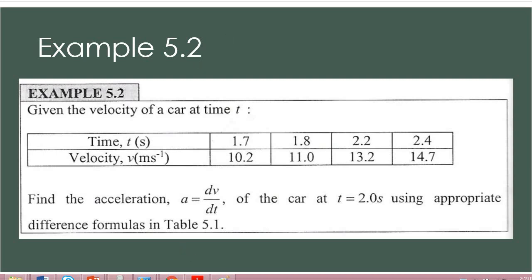Okay, hi class, so this is our second example. We can see here that it gives the velocity of a car at time t. We have two parameters: first is time, so we have 1.7, 1.8, 2.2, and 2.4, and then we have our velocity. This question asks you to find the acceleration of the car at t=2.